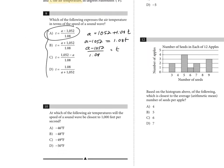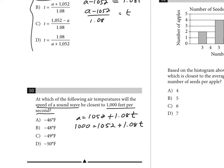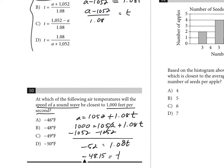Number ten: at which air temperature will the speed of the sound wave be closest to 1000 feet per second? Set a equal to 1000: 1000 equals 1052 plus 1.08t. Subtract 1052 to get negative 52 equals 1.08t. Dividing both sides by 1.08 gives t approximately equal to negative 48.15. The closest answer choice is B.